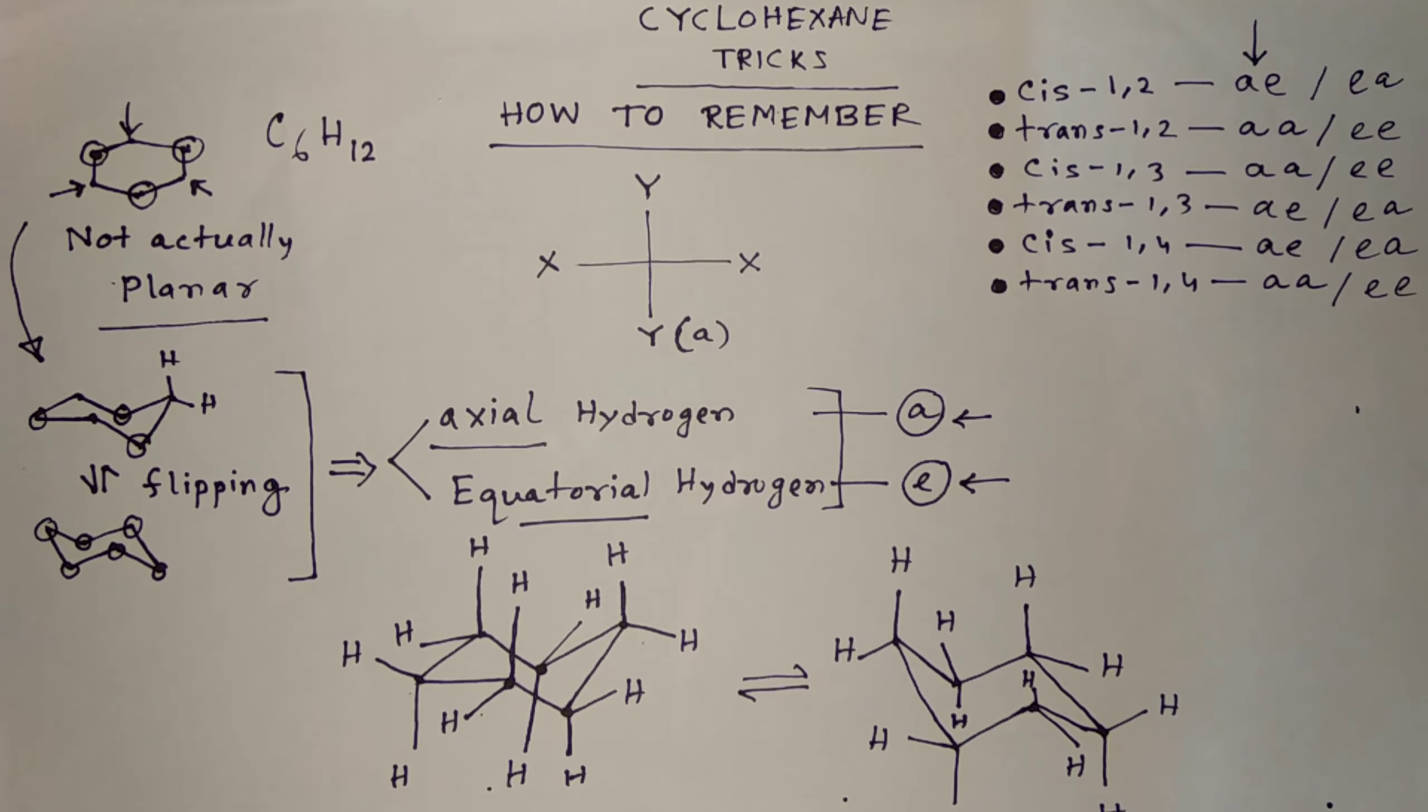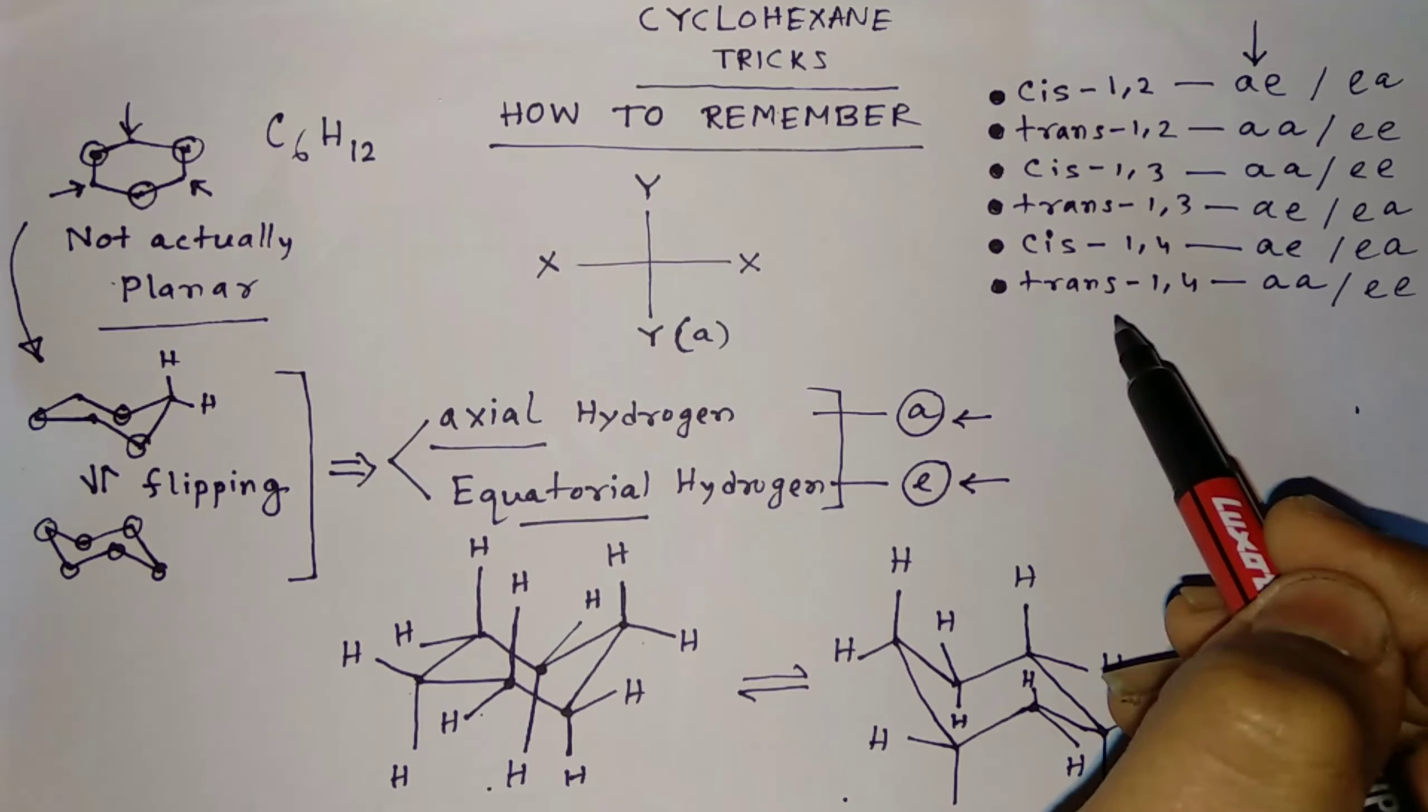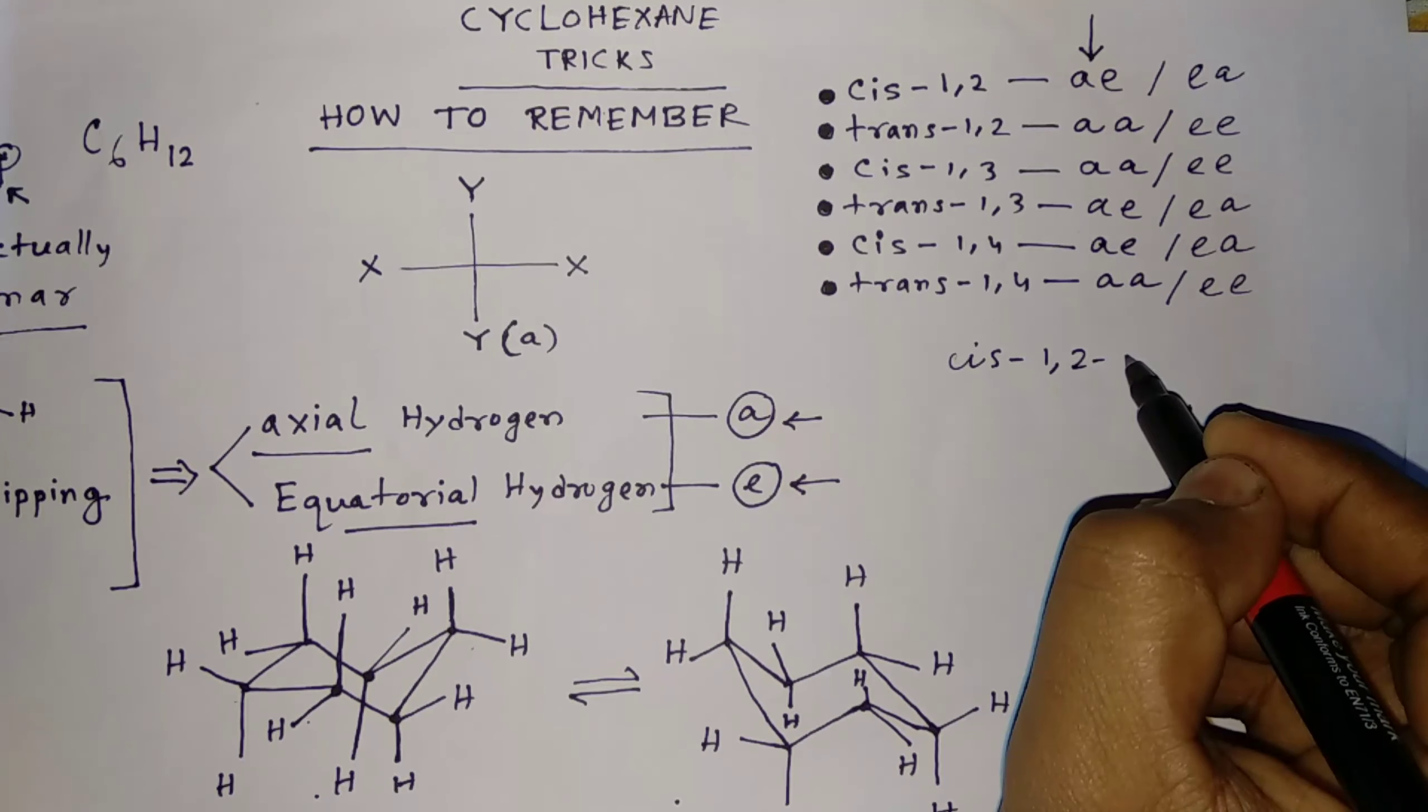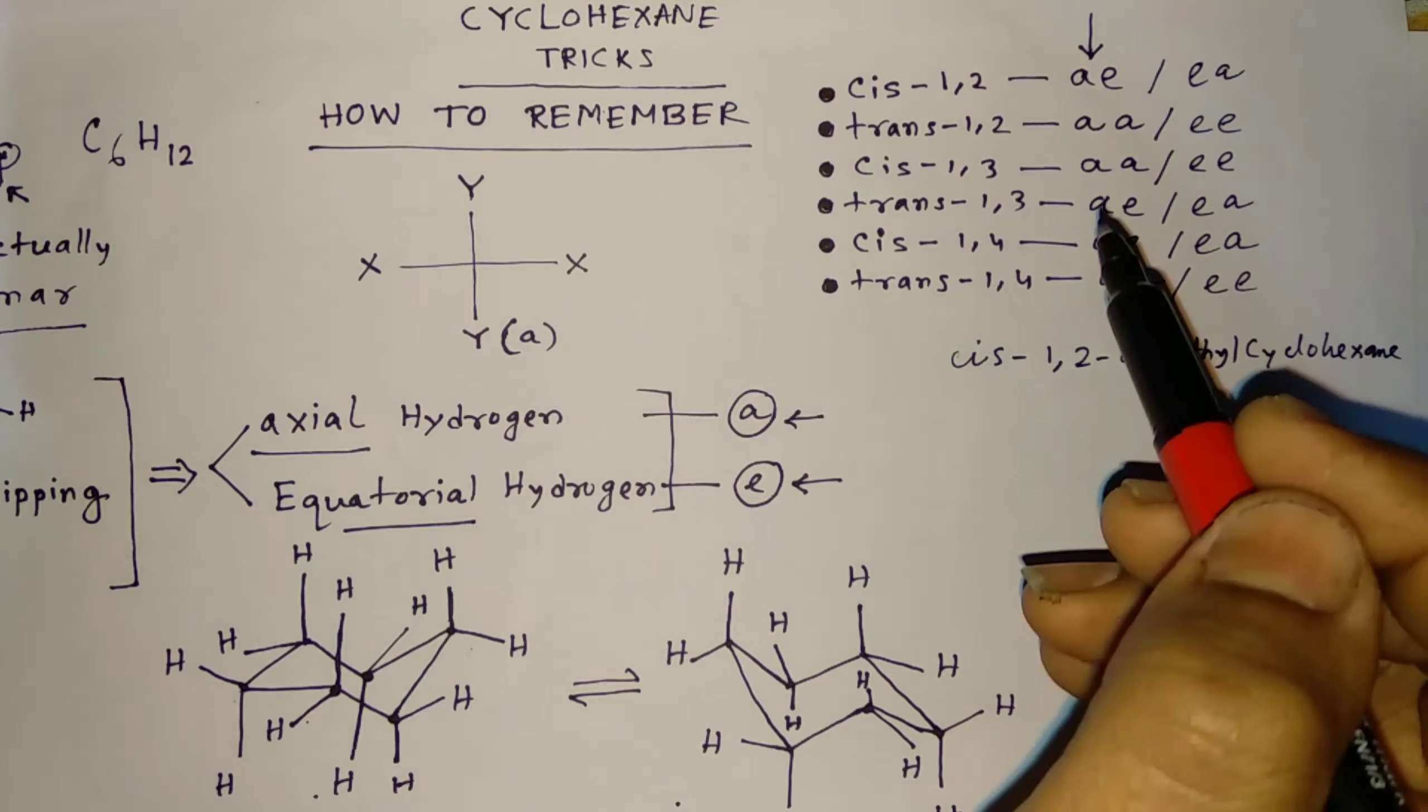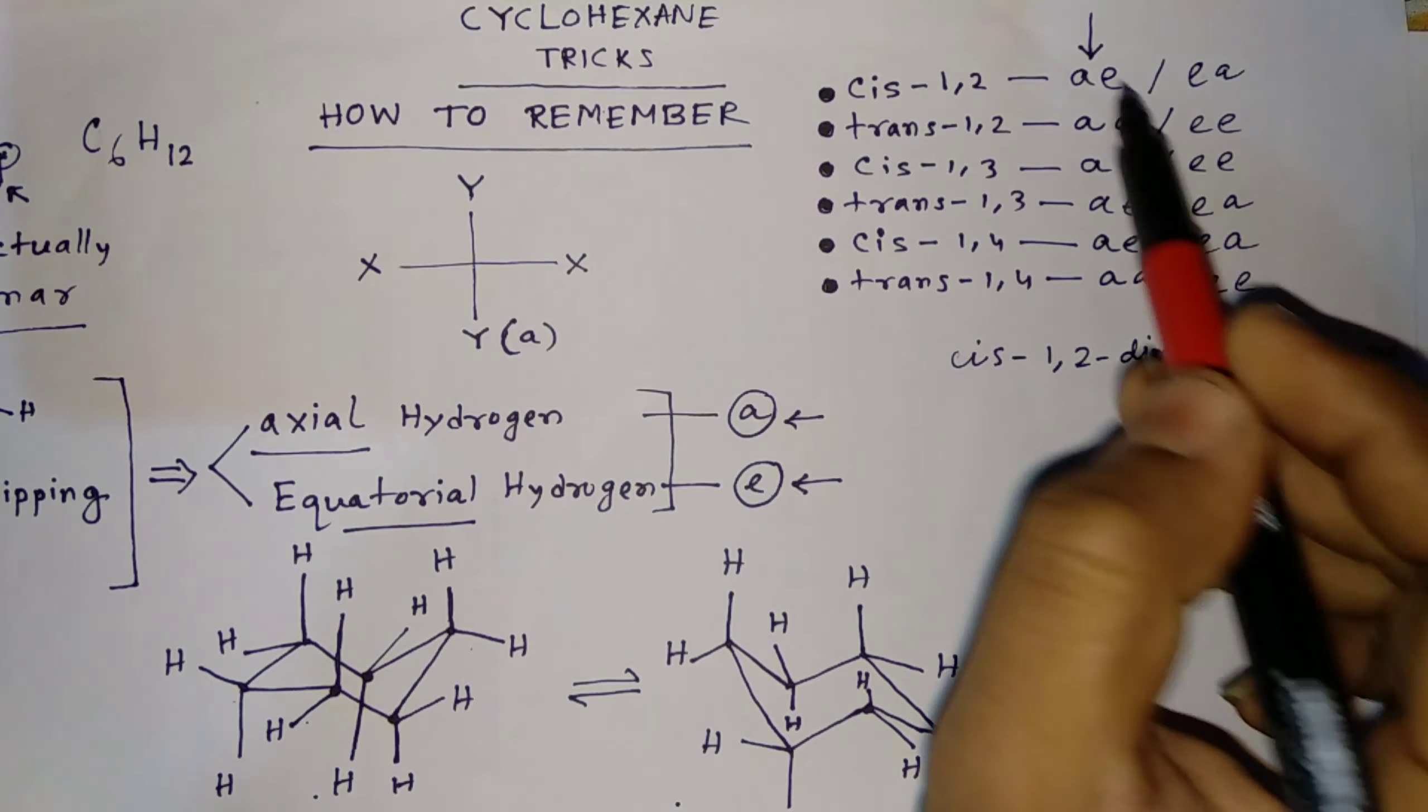So now, coming to different examples. First, maybe CIS-1,2 system, TRANS-1,2 system, CIS-1,3 system, TRANS-1,3 system, CIS-1,4, TRANS-1,4 system. So how to remember this? I am explaining you by giving an example. Let's take CIS-1,2-dimethylcyclohexane.